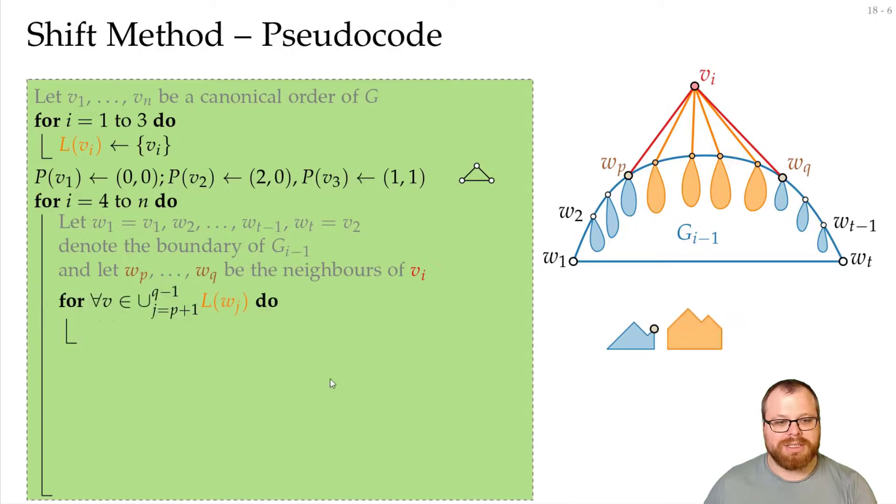Then we have the middle part. And for that we look at the L sets of all the vertices in between here, from p+1 to q-1. And all of those we shift by 1 to the right.